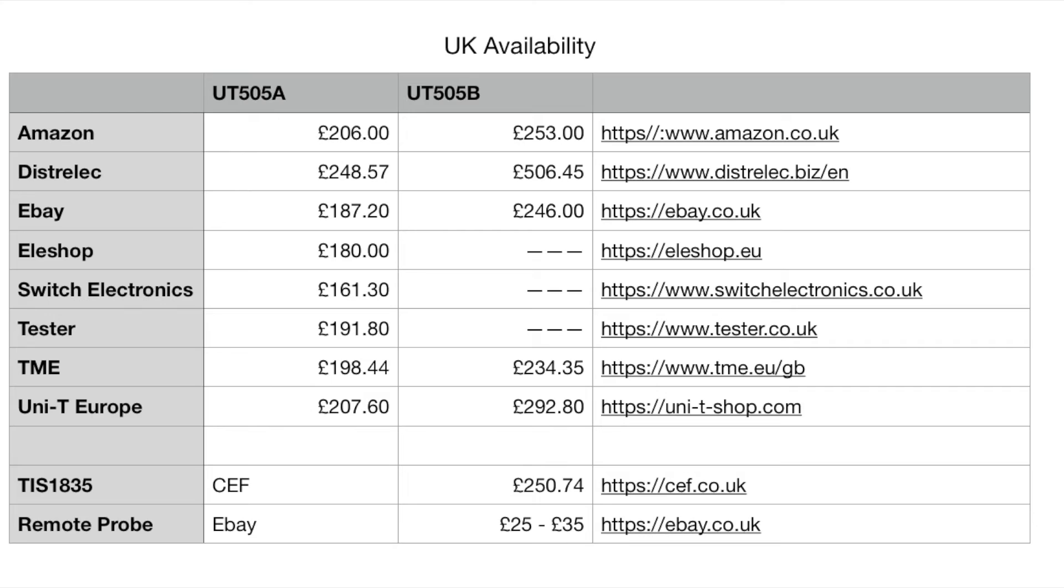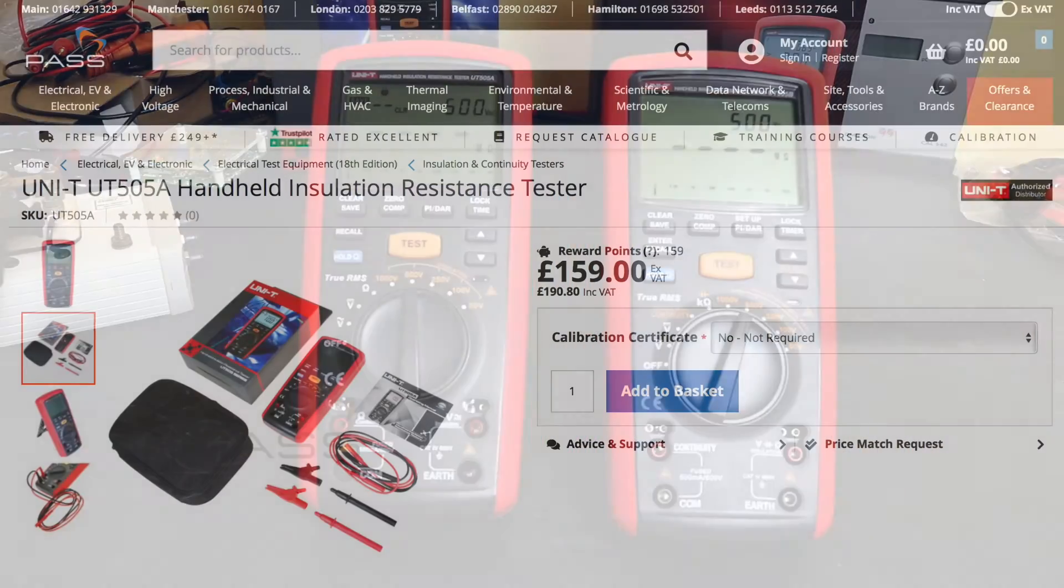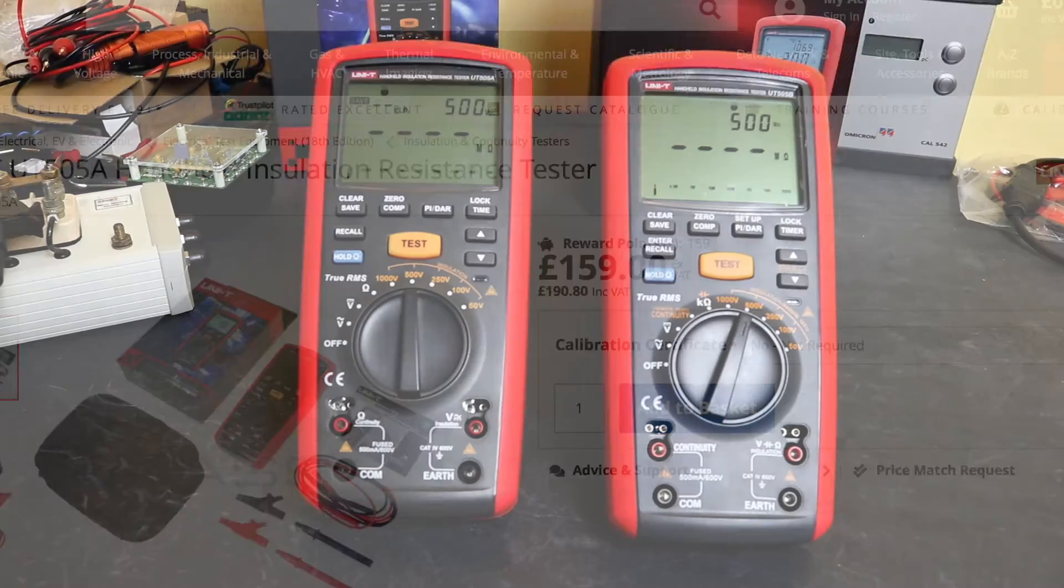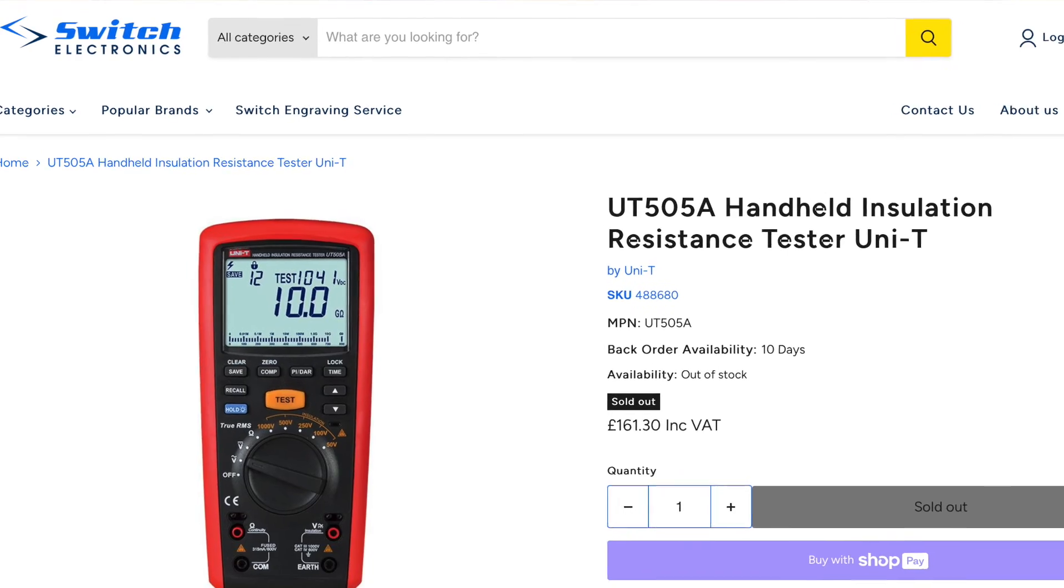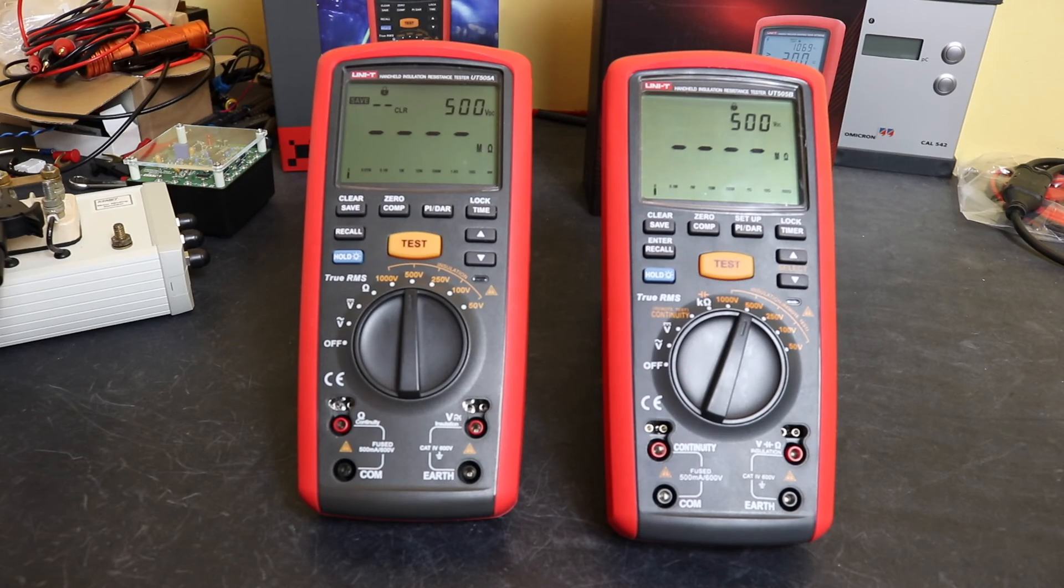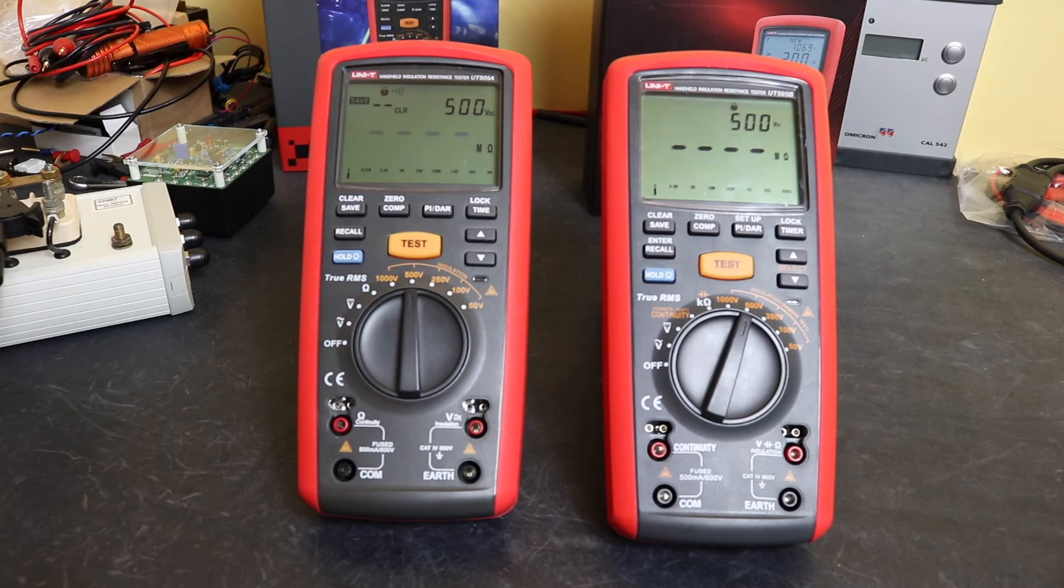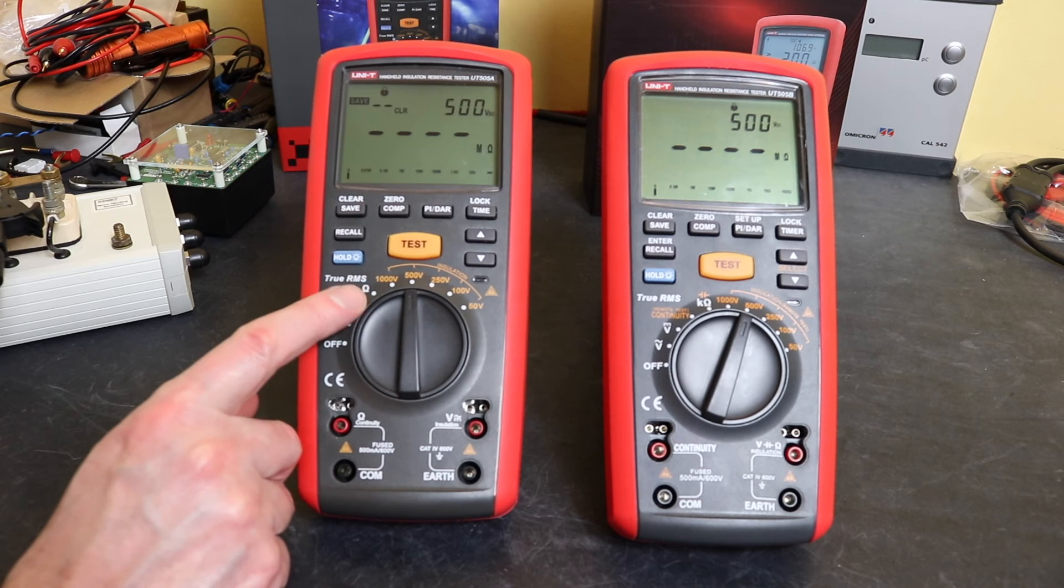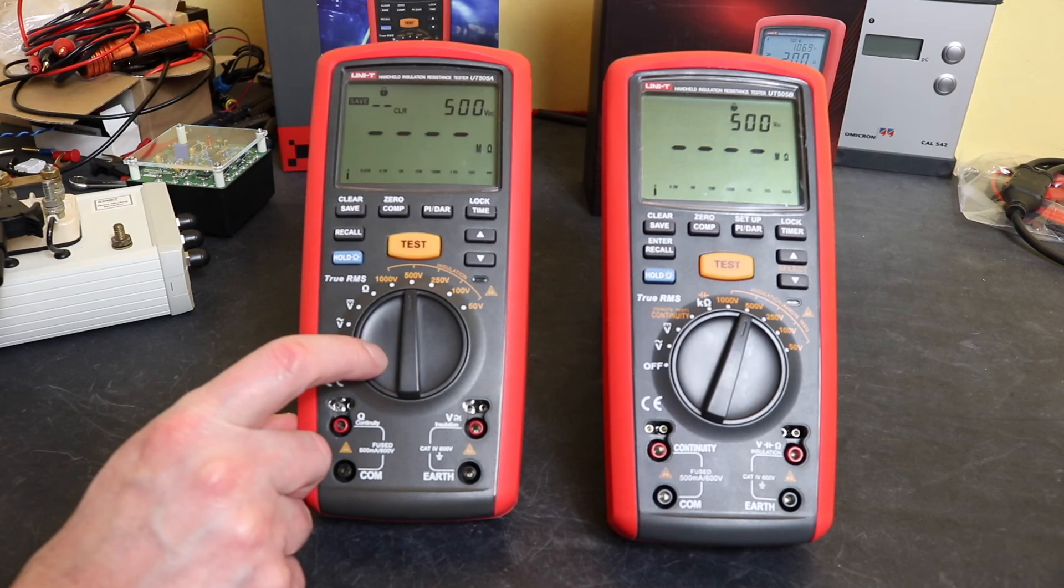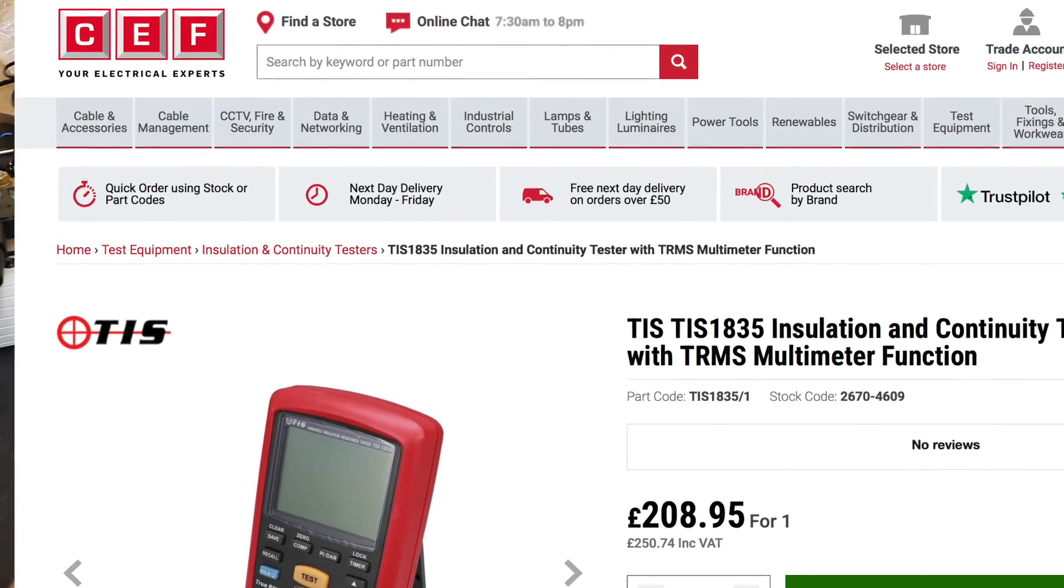Then you move to shops that can just supply the UT505A, which is Tester there, which I bought the UT505A from - Tester - and the UT505B from Unity Europe through Amazon. But Tester there is a UK based instrument supplier, they can supply at reasonable price. Switch Electronics is a very good price - that seems to be the best price I can find at the moment. And then L Shop also supply it, that's another European based supplier. The UT505A, it's worth noting that this is rebadged in the UK by Test Instrument Solutions, and you can usually buy those instruments from CEF. It comes as the TIS 1835.